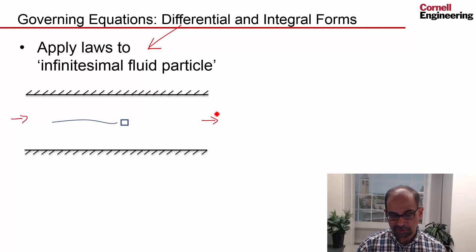We follow an infinitesimal fluid particle going through the flow domain. And if we blow up that fluid particle, we say its dimensions are delta x and delta y.